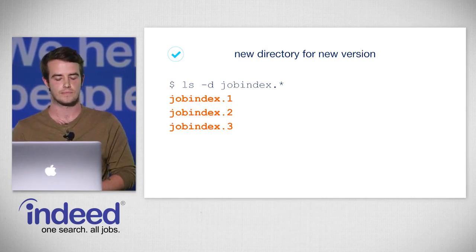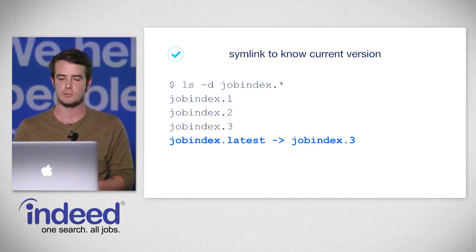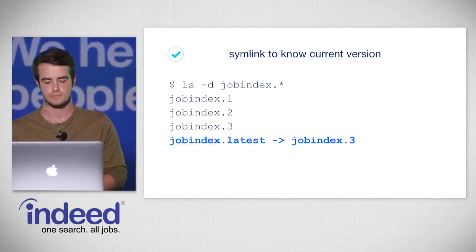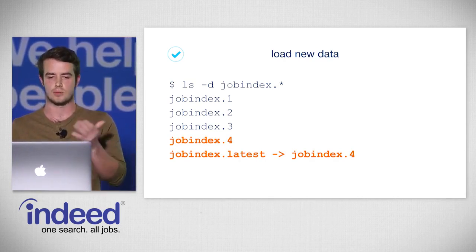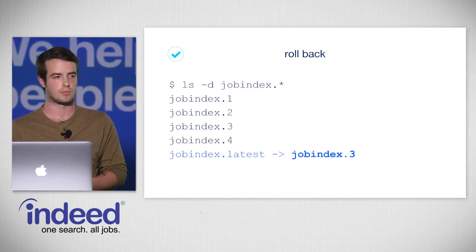We use a symlink called jobindex.latest to create a reference to the current version of the artifact. A symlink in a Unix-like file system is just a reference to another file or directory — for example, jobindex.latest pointing to jobindex.3. As we download new data, all we have to do to cause the consumer to reload the data is update the symlink to point to the new version. If we wanted to roll back, we'd just change where jobindex.latest points.